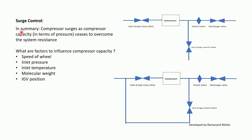As understood in the previous lecture, a compressor surges because its capacity is not enough to overcome the system resistance. The factors that influence compressor capacity are: the speed of the wheel or impeller, inlet pressure, inlet temperature, molecular weight, and inlet guide vane (IGV) position.